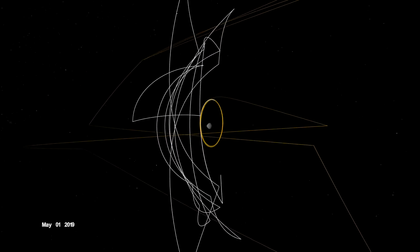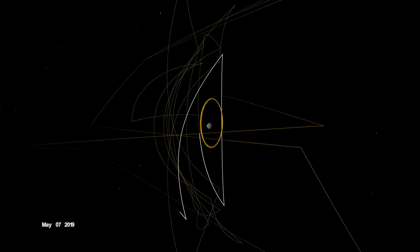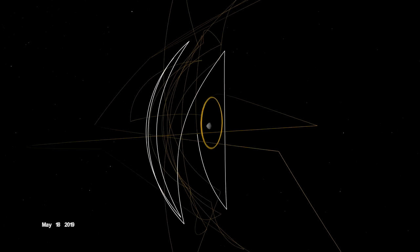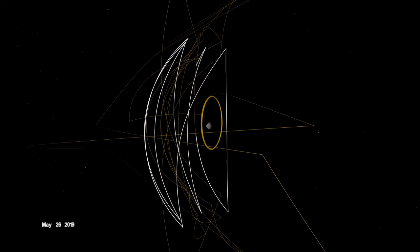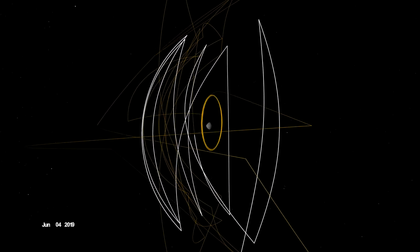During the detailed survey, OSIRIS-REx globally mapped Bennu at only 5 centimeters per pixel, the highest resolution of any planetary body, including Earth.